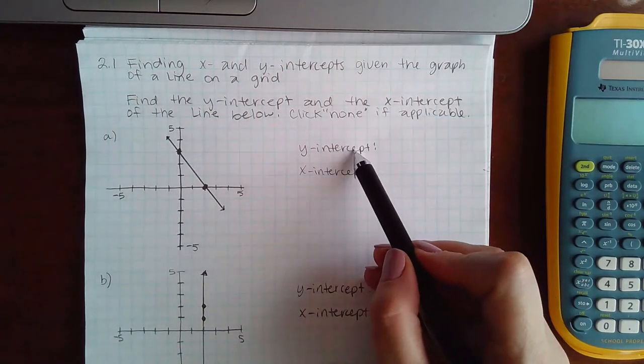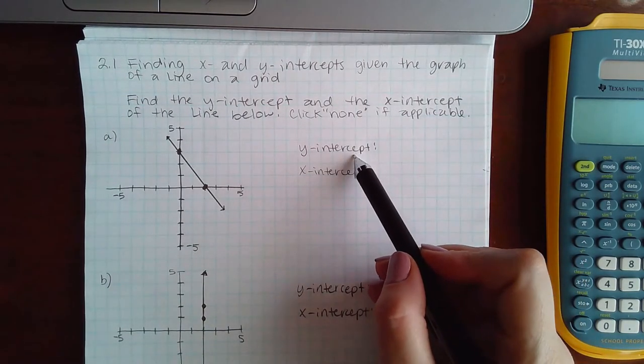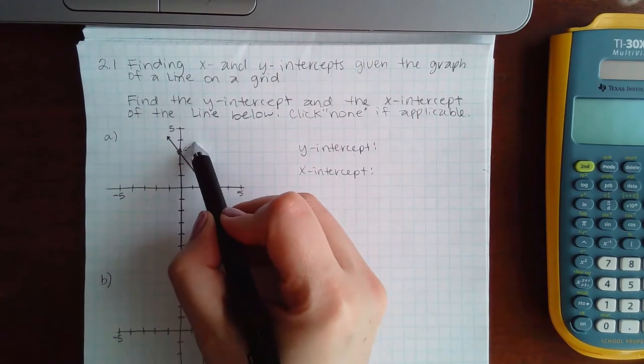So here they're wanting the y-intercept. That would be where the graph crosses the y-axis, and that happens here.